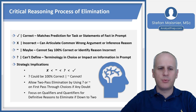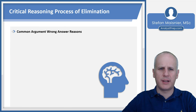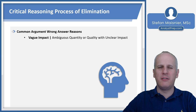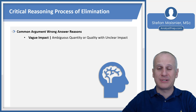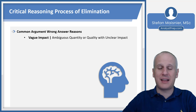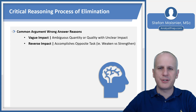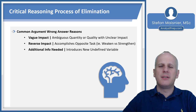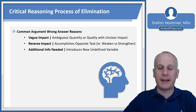Now that we understand the check/X/squiggle/question mark system, let's talk about common wrong answer reasons, starting with argument wrong answers. First, there's vague impact — a quantity or quality with an unclear impact on the argument. Be aware of imparting meaning to words like 'a number' or 'some' that isn't there; a number could literally be any number, and some could be any value over zero. Also watch for reverse impact — if you're being asked to weaken an argument, there are often answer choices that actually strengthen it, so guard against selecting something that accomplishes the opposite task.